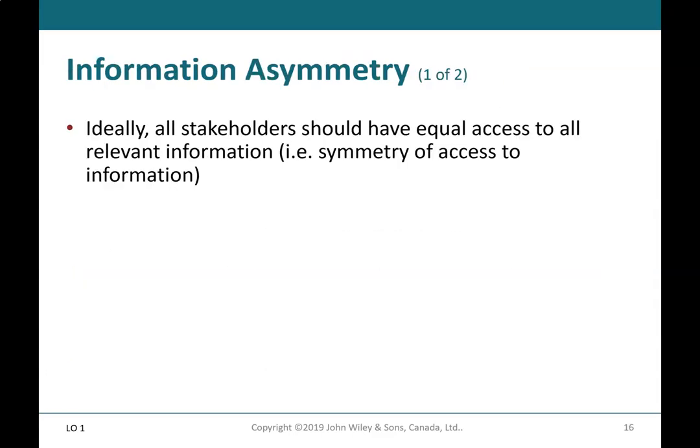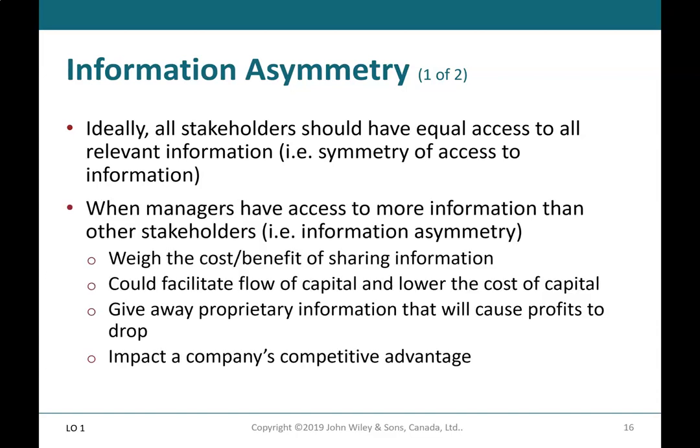Information asymmetry: Ideally, all stakeholders should have equal access to all relevant information — symmetry of access to information. When managers have access to more information than other stakeholders — i.e., information asymmetry — they weigh the cost and benefit of sharing information, which could facilitate flow of capital and lower the cost of capital, give away proprietary information that will cause profits to drop, or impact a company's competitive advantage.